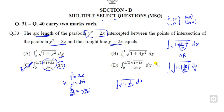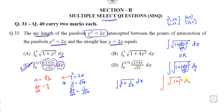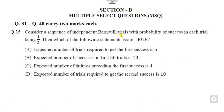For the second part, you find dx/dy. From y² = 2x, we get dx/dy = y. Substituting into the arc length formula gives the integral of √(1 + y²) dy, with limits y = 0 to y = 1. This is also a correct answer. So options A and C are the correct options for question 33, earning you two marks.